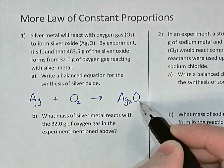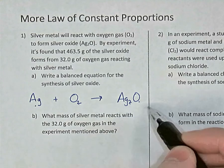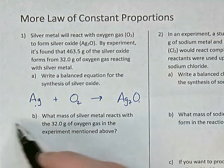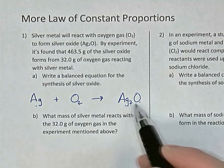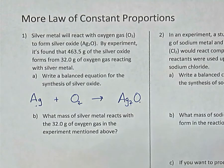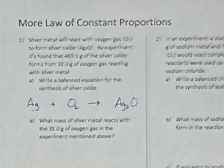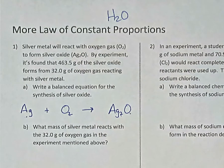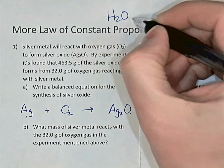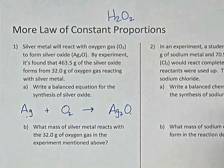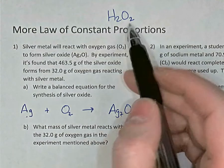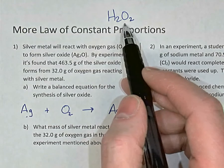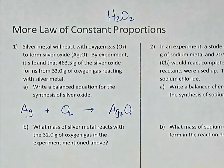You might think we could put a subscript 2 beside the O to fix the oxygens. But if you change the subscripts in a chemical formula, you're changing the actual formula for that substance — that's not allowed. For example, water is H₂O, but if you change it to H₂O₂, you no longer have water — you have hydrogen peroxide. So changing subscripts is not allowed when balancing an equation.